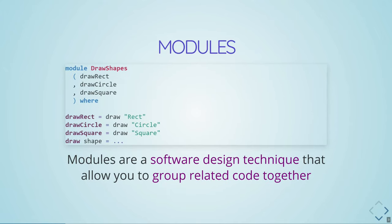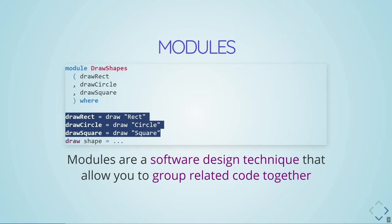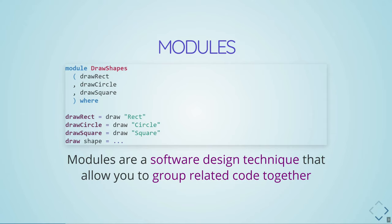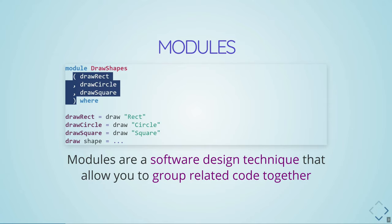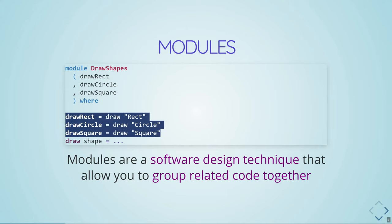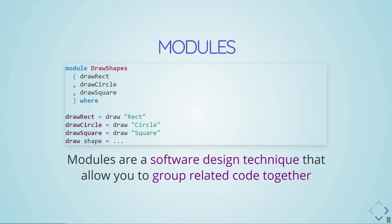The Prelude is a module. Modules are a software design technique that basically allow you to group together related code. For example, let's say you wanted to create some code to draw different shapes — you might have a few functions for drawing rectangles, circles, and squares. You would specify that this is a module and give it a name at the top of the file, and you would specify in the module declaration which functions you're going to export — the functions that anybody importing this module would want to use.